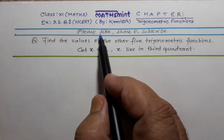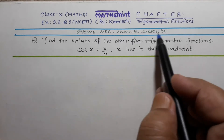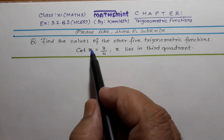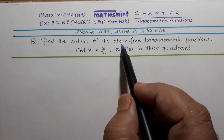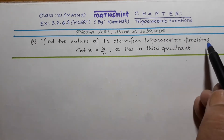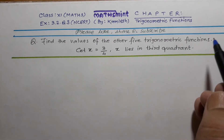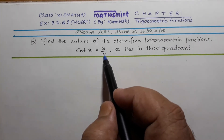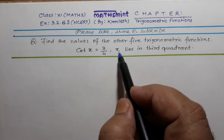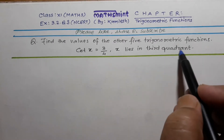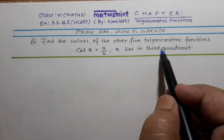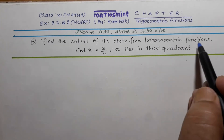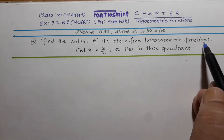I hope you will please like, share and subscribe this channel. The question is: find the values of the other 5 trigonometric functions. One function, cot x = 3/4, is given, and x lies in the 3rd quadrant. So the other 5 trigonometric functions we have to find.